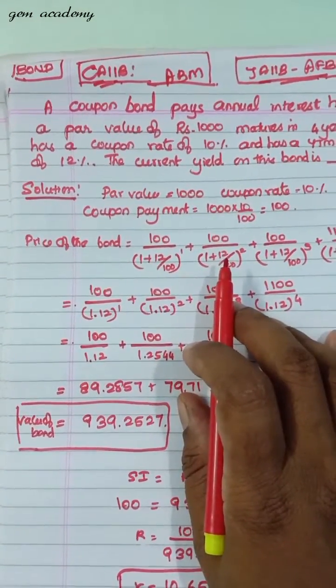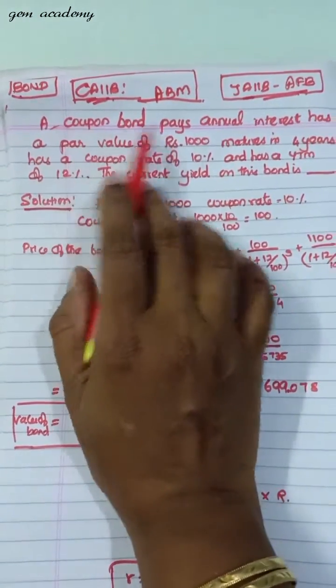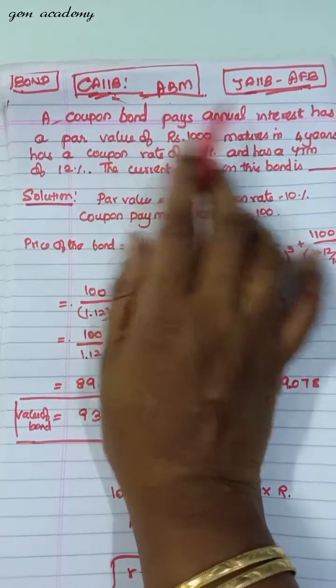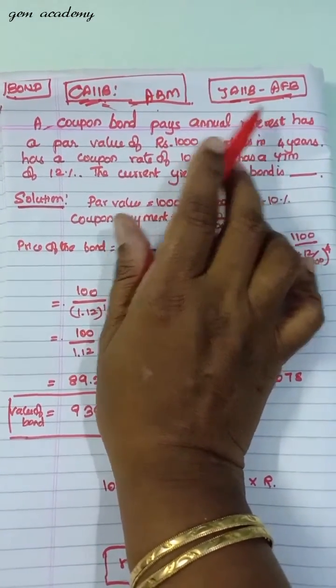Hello friends, now what you're going to see is bond problems. This is common for both CAB, ABM and JAB, accounting and finance for bankers.